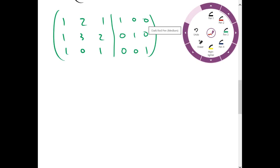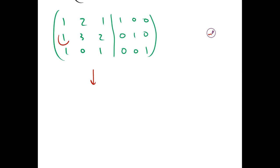So first thing we do is we want to get a zero here. So we take R2 minus R1 which gives us 0, 1, 1, negative 1, 1, 0. And the bottom row is unchanged.